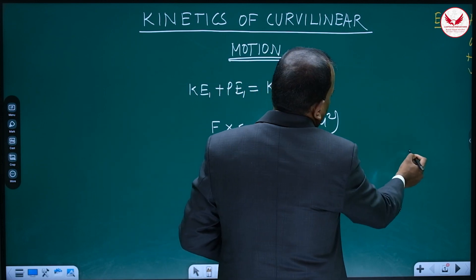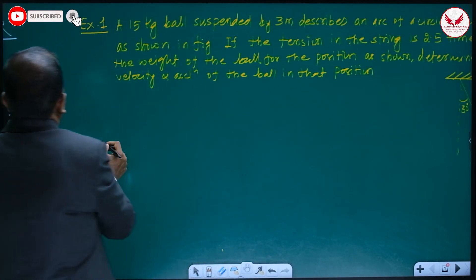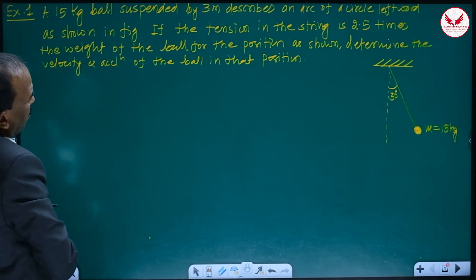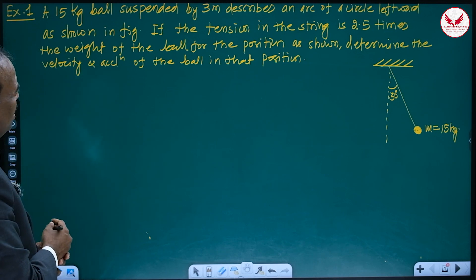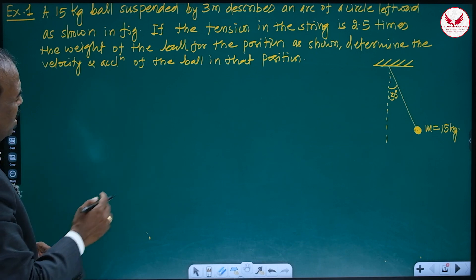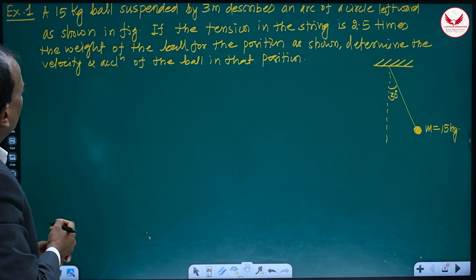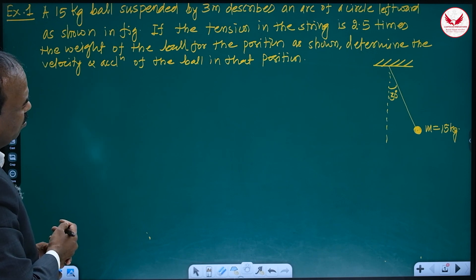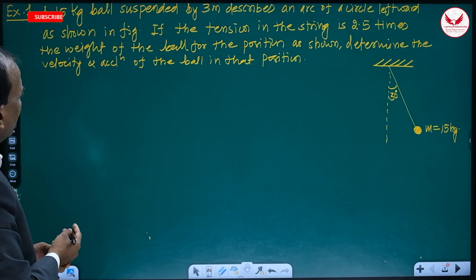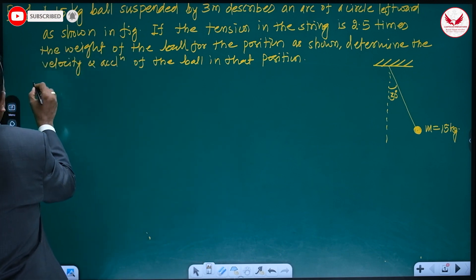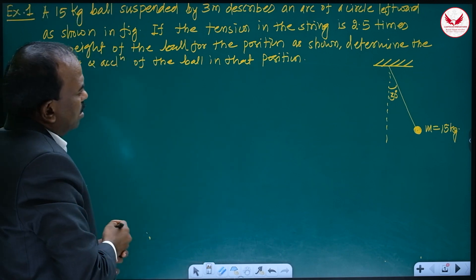Such one or two examples we will see, and these are very famous and frequently asked in exams. A 50 kg ball suspended by a 3-meter string describes an arc of a circle leftward as shown in the figure. If the tension in the string is 2.5 times the weight of the ball for the position shown, determine the velocity and acceleration of the ball in that position.